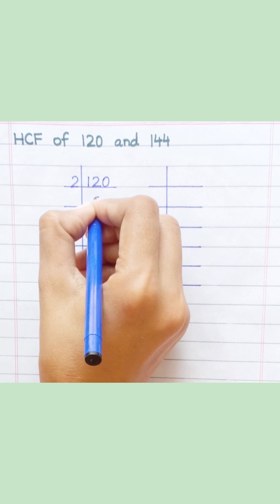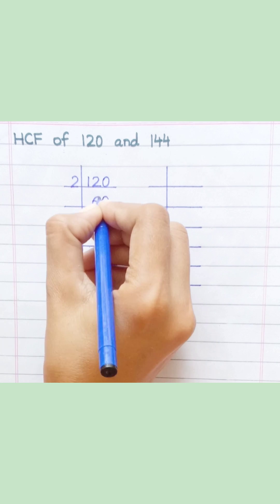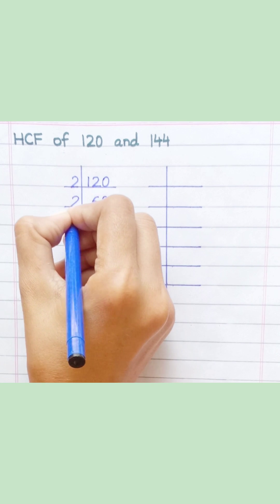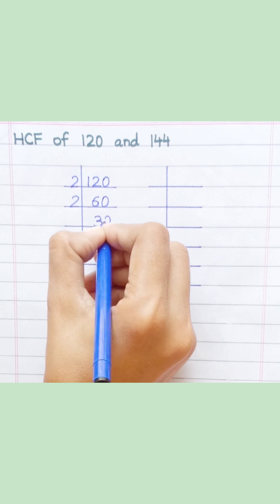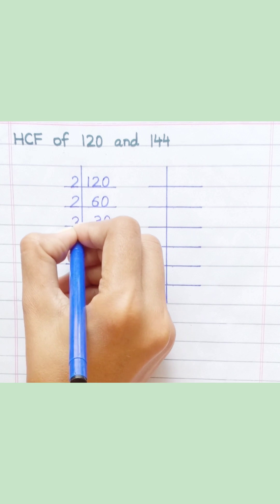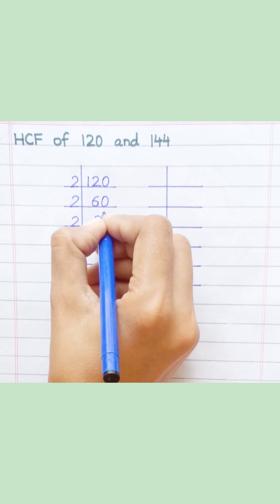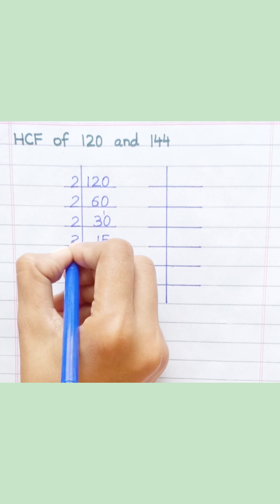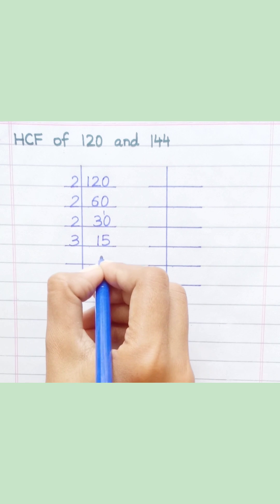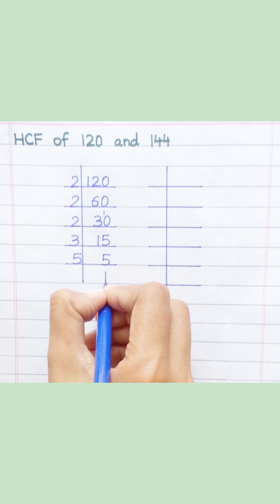2 6s are 12, 2 0s are 0, 2 3s are 6, 2 0s are 0, 2 1s are 2, 2 5s are 10, 3 5s are 15, 5 1s are 5.